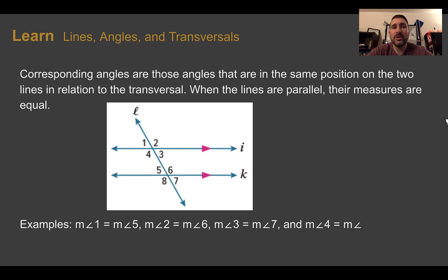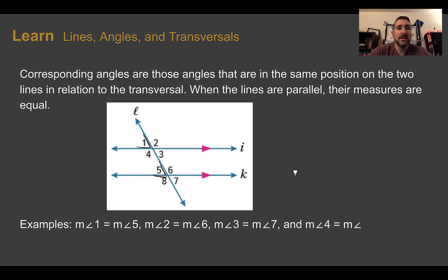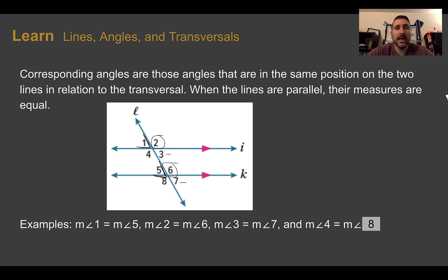Another type of relationship is corresponding angles. These are angles in the same position in relation to the transversal. If it's with parallel lines, their measure is also equal. Angle one is in the same position as angle five — both in the top-left corner where the transversal crosses the parallel lines — so they have equal measures. Same with angles two and six, three and seven, and four and eight. Remember: the transversal must cross parallel lines for these relationships to hold; if the lines are not parallel, those relationships are no longer true.